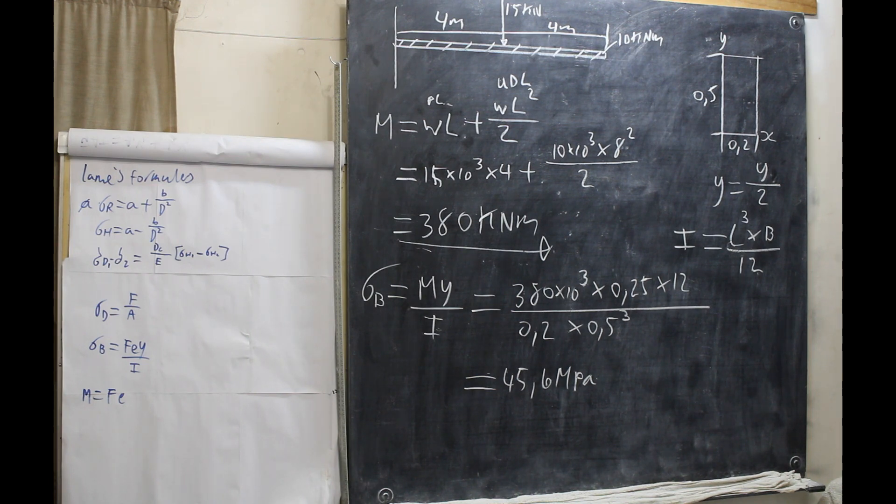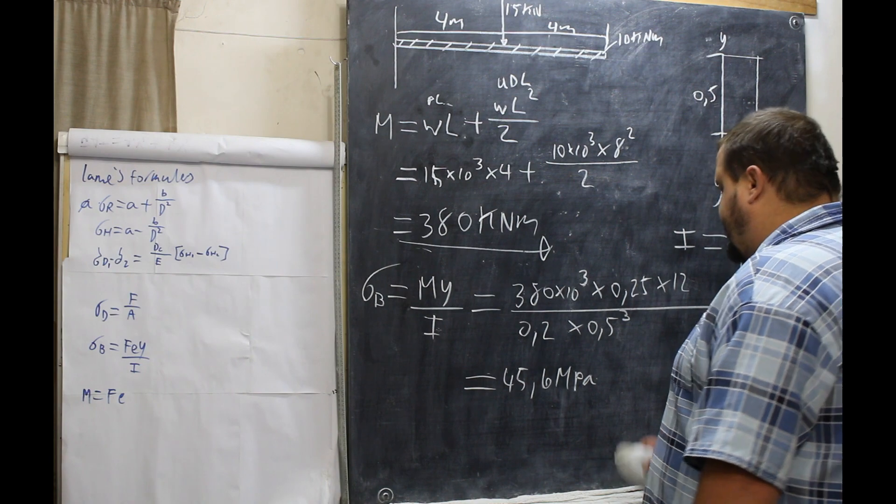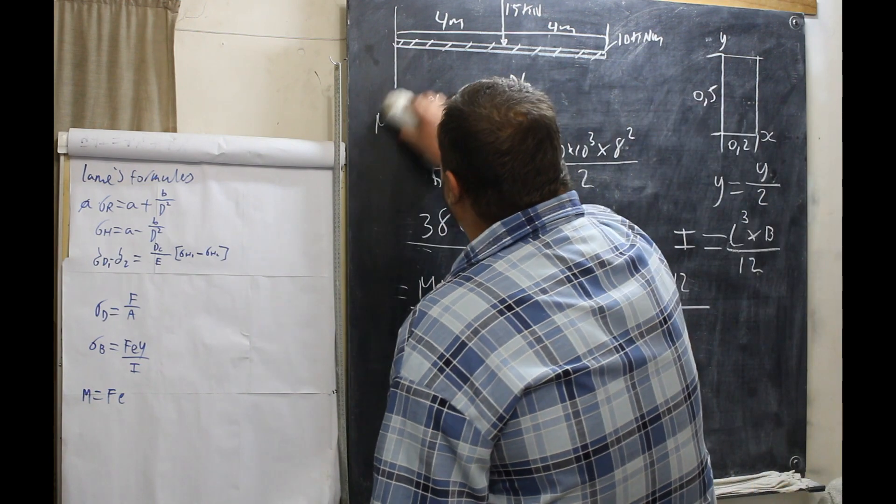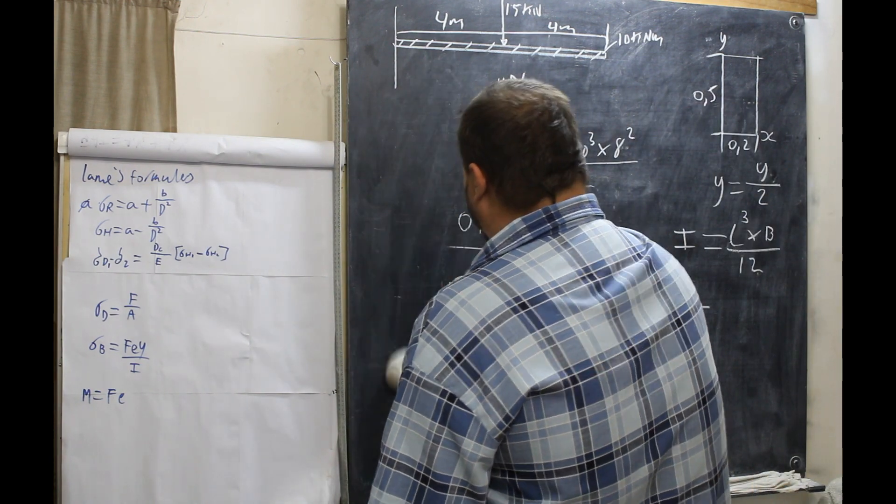There's only two stresses. There's a minimum stress and a maximum stress. This is the maximum stress. Now the stress is the exact same going both ways because it is a rectangular cross section. So now they want us to draw the stress diagram. The stress diagram is fairly simple.